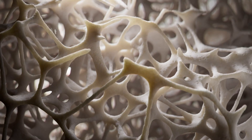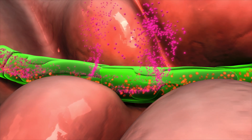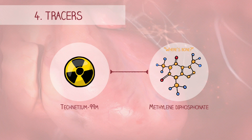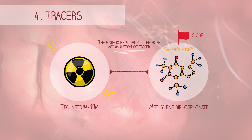Bone reacts to injury by taking calcium and phosphate from the circulation and depositing them at the injury site as a repair mechanism. The tracer used in bone scans, methylene diphosphonate, behaves like phosphate and mixes with the normal phosphate circulating in the bloodstream. Any time normal phosphate is deposited in the skeleton, so is the tracer. Essentially, the methylene diphosphonate will guide the radioactive material to bone, and from there, technetium will emit radiation, which will be picked up by a camera. The tracer is absorbed in proportion to blood flow and bone metabolism — the more bone activity, the more accumulation of tracer there will be.